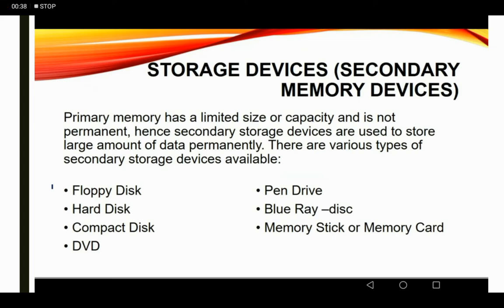As you can see, storage devices are also called secondary memory devices. Primary memory has a limited size or capacity and is not permanent. As we know, primary memory like RAM and ROM are only used for some instructions and for processing. We can't store any data on primary storage, so secondary storage devices are used to store large amounts of data permanently.